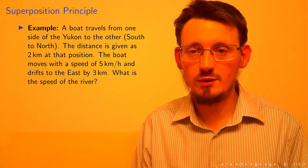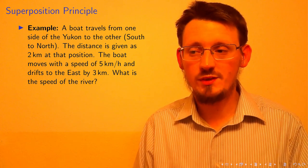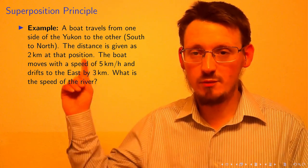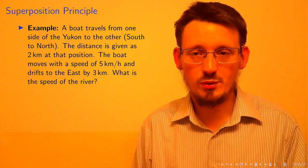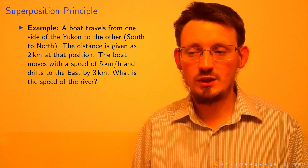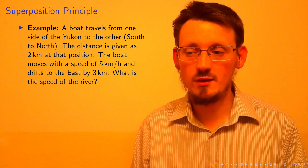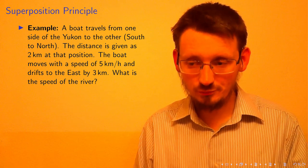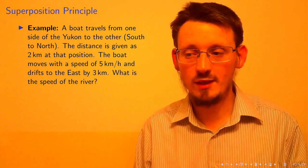Imagine there is a boat that wants to cross the Yukon River in Canada from the south to the north as explained in this exercise. The river flows from west to the east which leads to a drift of the boat of approximately 3 km to the east. The distance between the two river banks is given as 2 km at that specific position.